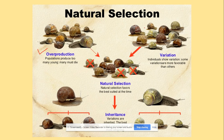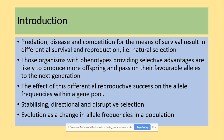For example, we have different colors of shells on those snails. In natural selection, the less advantaged individuals will ultimately be eliminated. The less advantageous alleles will decrease in frequency, while the more advantageous ones - like the brown ones here - will be selected. They will reproduce and produce fertile offspring, increasing the frequency of that specific allele in the population.